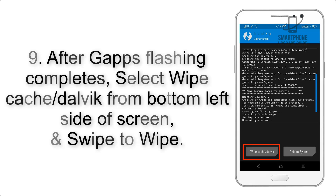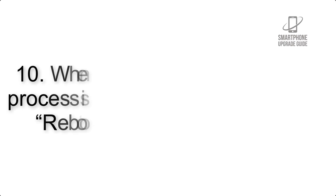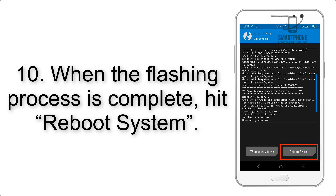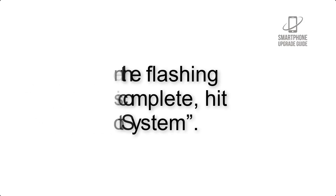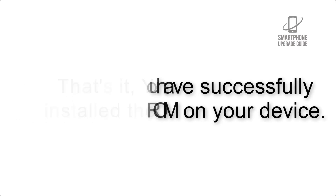Step 9: After GApps flashing completes, select Wipe Cache and Dalvik from the bottom left side of the screen and swipe to wipe. Step 10: When the flashing process is complete, hit Reboot System. That's it — you have successfully installed the ROM on your device.